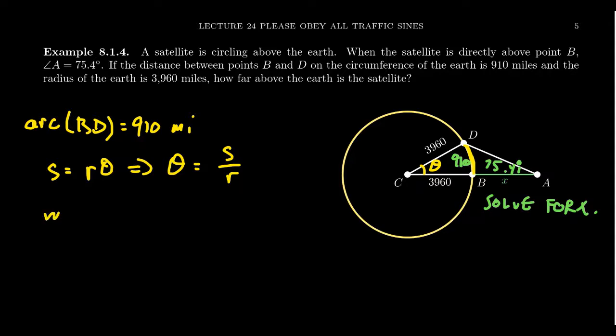That's going to give us the measure of angle C right here. It's going to equal the 910 miles, which was the arc length, divided by the radius of the circle, which is 3,960, the radius of the Earth. And this is going to be a measurement in radians. We can simplify this thing.